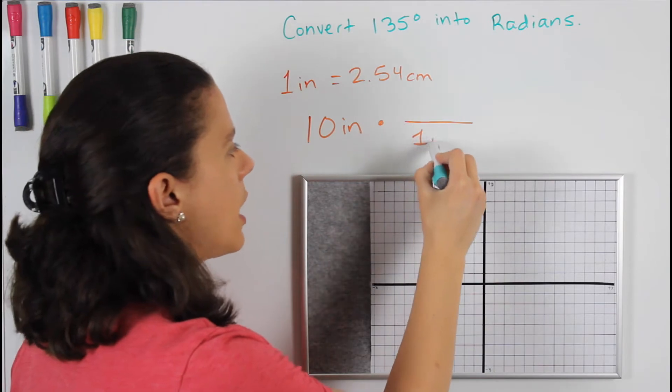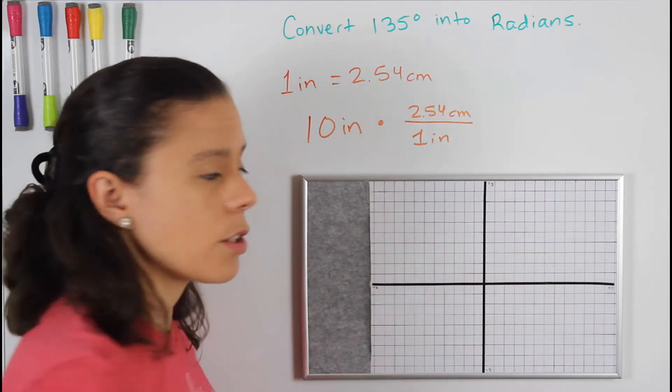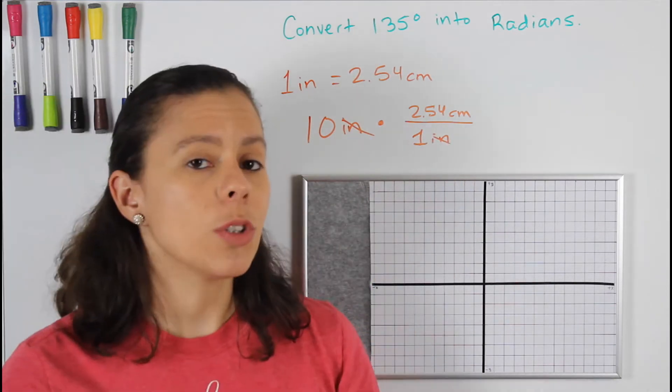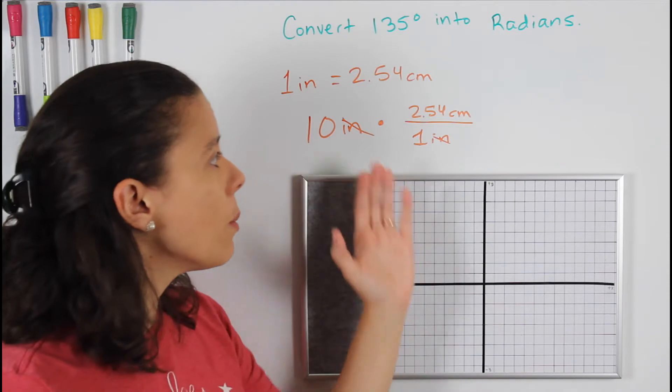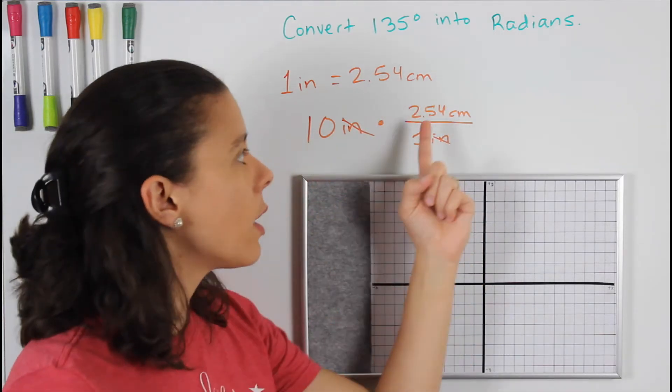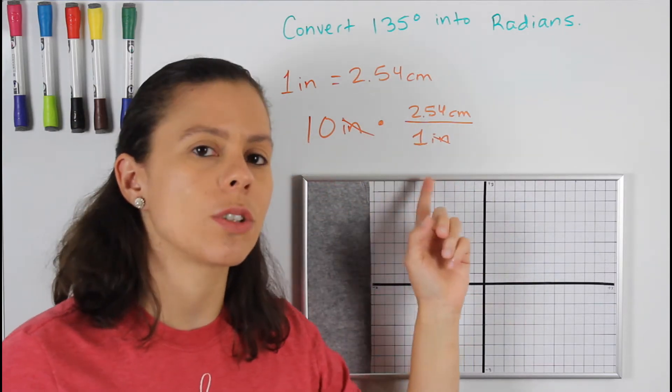I do that to cross out the inches. The most important part about this is that when you're multiplying by a ratio, the thing you have to think about is that whatever's at the top has to be the exact same thing as whatever's at the bottom.